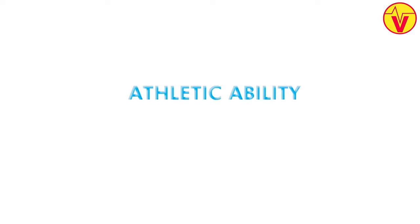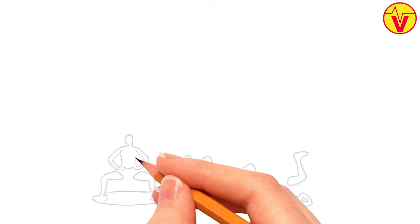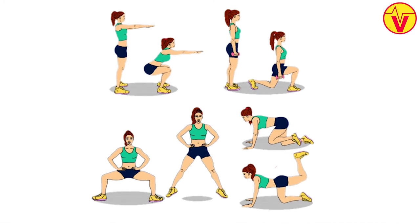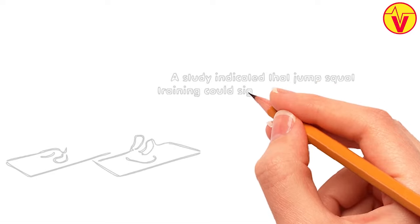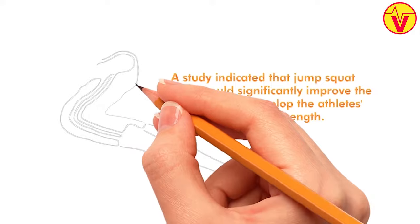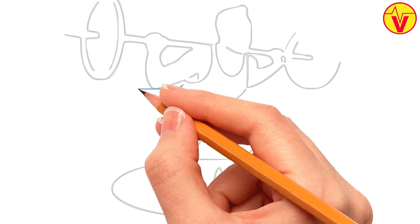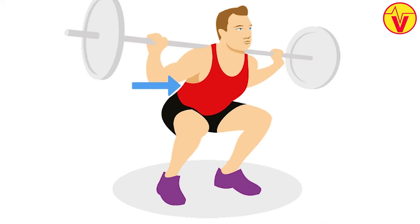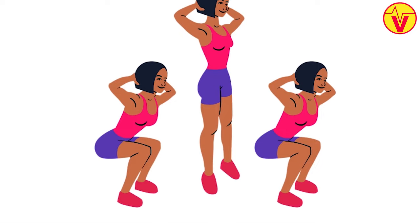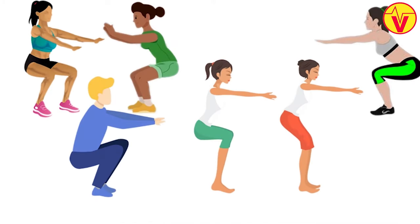6. Athletic Ability. The addition of jump squats to your workout regime can help you develop tremendous strength and speed, which can positively improve your athletic performance. A study indicated that jump squat training could significantly improve sprint time and develop the athlete's explosive leg strength. Box squats are known to create pure power and speed for your lower body. The incorporation of squats to your workout routine can significantly raise the efficiency of your professional training. There are endless varieties of squats, so you can keep yourself challenged with different variants.